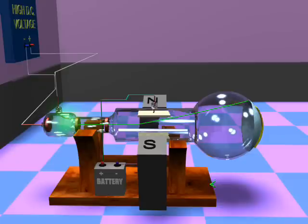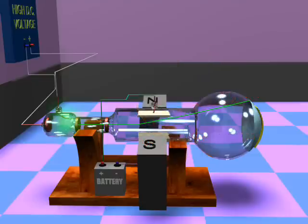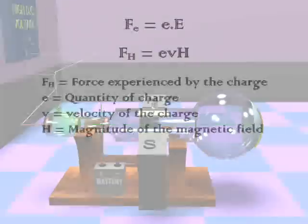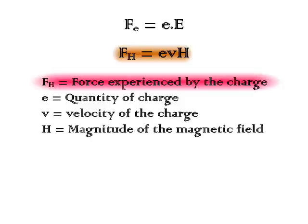When a magnet is kept here, the beam experiences a magnetic field in this direction and the direction of motion of the charged particle is this. According to Fleming's left hand rule, the negatively charged particle experiences a force in this direction. The magnitude of force is given by FH equal to eVH, where FH is the force experienced by the charge in the magnetic field, e is the quantity of charge, V is the velocity, and H is the magnitude of magnetic field applied.